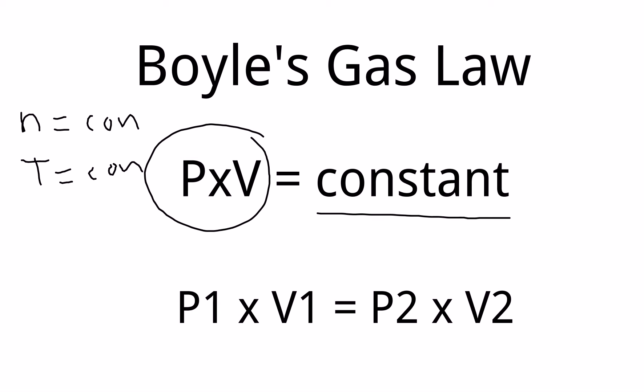then pressure and volume will always equal a constant. So if you look at this, when we have a multiplication, pressure times volume,